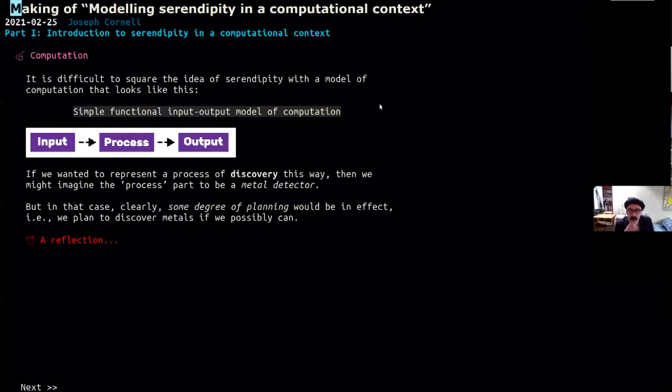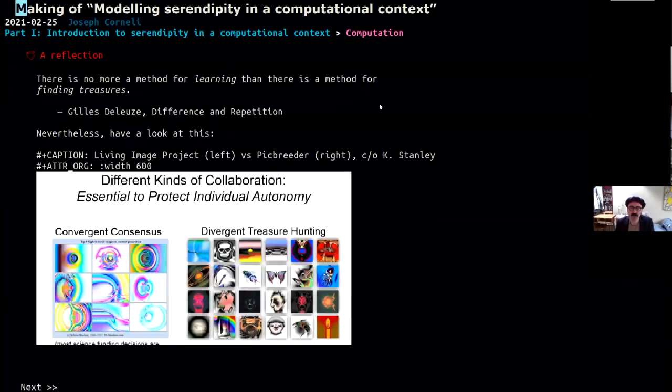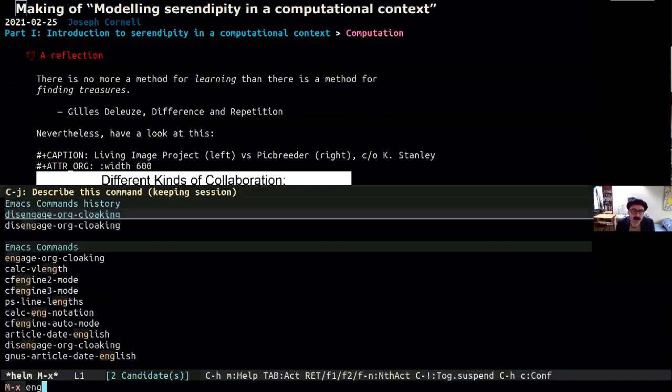Let's jump right into the computation theme and just acknowledge it would be quite difficult to square the idea of serendipity with any model of computation that looks like this. But if you had some kind of introduction to computing, you might see something that looked like this. We have an input, a process, and an output. This is a simple input output model of computation. So if we wanted to model a process of discovery this way, then we might imagine the process part to be something like a metal detector where you're inputting some stuff and you're planning in this case to detect whatever metals might be in there and use them somehow. But I just said the keyword, we're planning something. So there's some degree of planning involved in this. So that doesn't really square with our notion of serendipity.